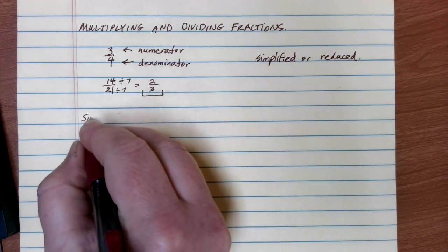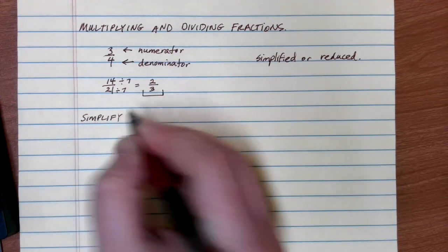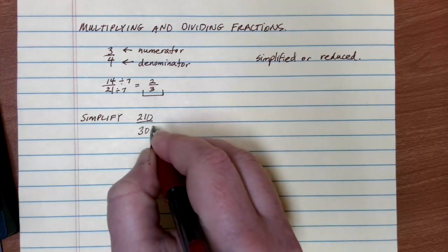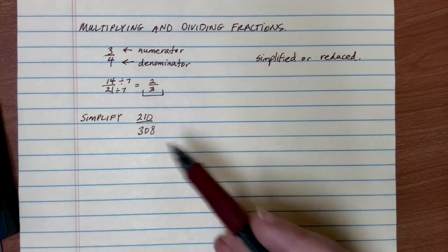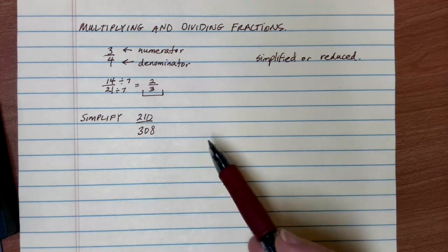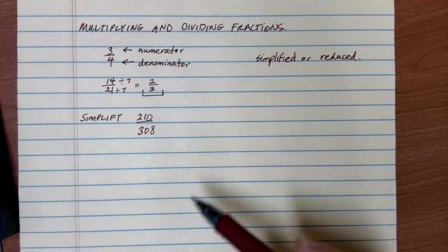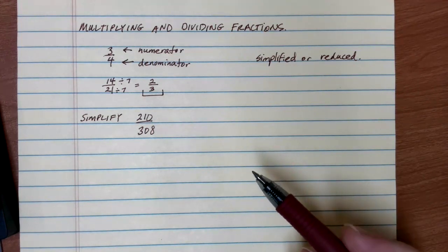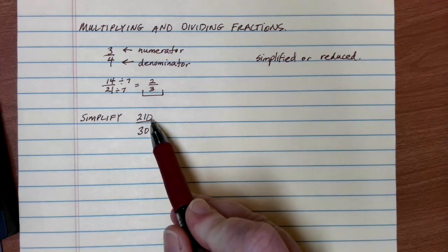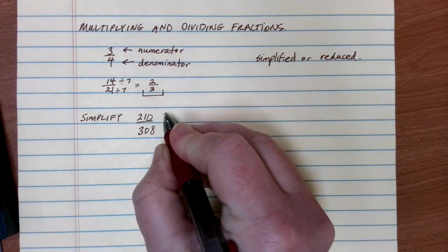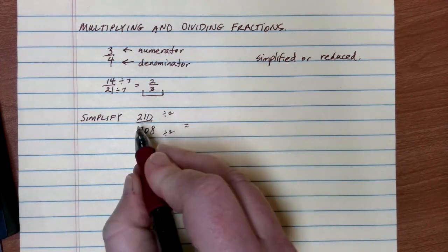Now, when we're trying to simplify numbers, sometimes our values can be very large. Suppose we have 210 over 308. These numbers get really big and aren't in my standard times tables. So when you're asked to simplify large fractions like this, just go ahead and try to start with anything easy that you see first. In this example, these are both even numbers, so I know that two can go evenly into both the top and the bottom.